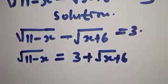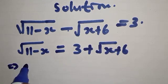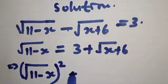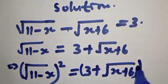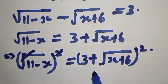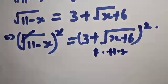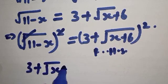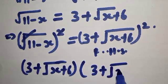What we do next is square both sides. Squaring both sides, the left side gives us 11 minus x (the square cancels the root). On the right side we have 3 plus square root of x plus 6, all squared.